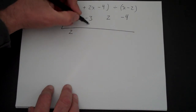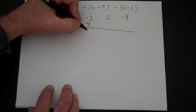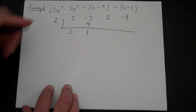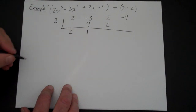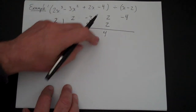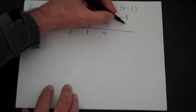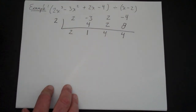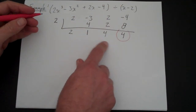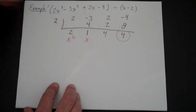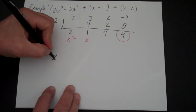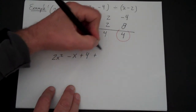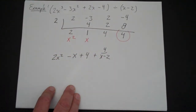2 times 2 is 4 — put it right there and add: minus 3 and 4 is 1. Now simply repeat: 2 times 1 is 2, add to get 4. 2 times 4 is 8 — put it there and add: minus 4 and positive 8 is 4. This is your remainder, this is your constant, this is your x, and this is your x squared. Your answer is 2x squared minus x plus 4, plus remainder 4 over x minus 2. And you're done.